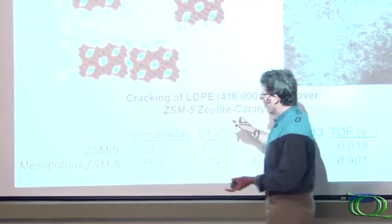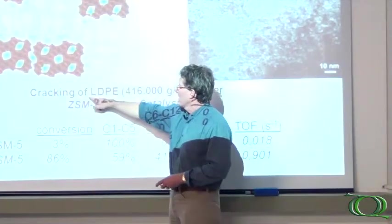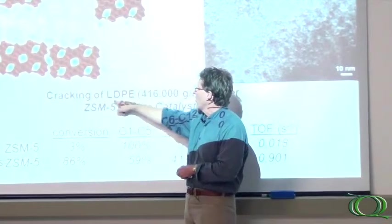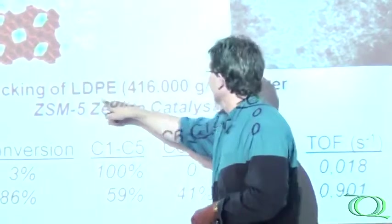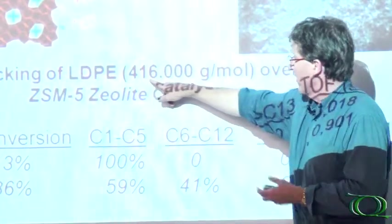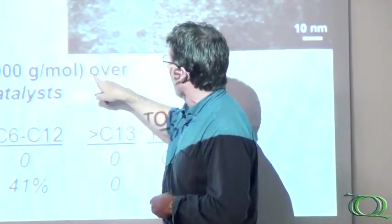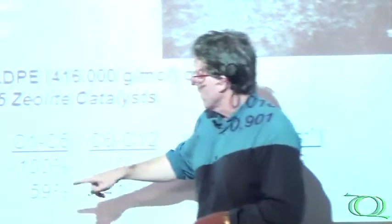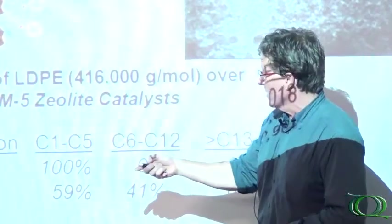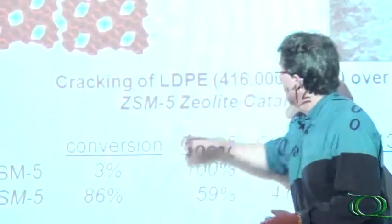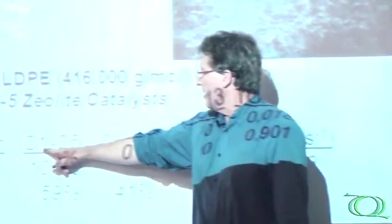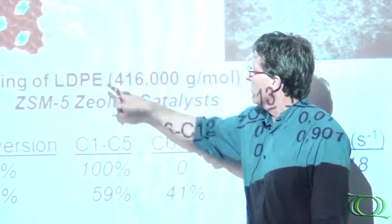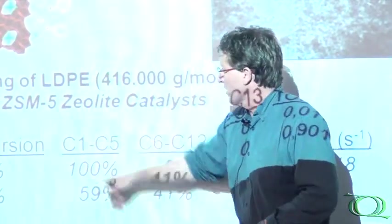What you can see by comparing this for the cracking, the decomposition of low density polyethylene - this would be for recycling of polymers, molecular weight about 400,000 grams per mole over a zeolite catalyst - the normal conventional ZSM-5 converts this only 3%, very small. It breaks it to very small molecules on the surface of large crystallites.